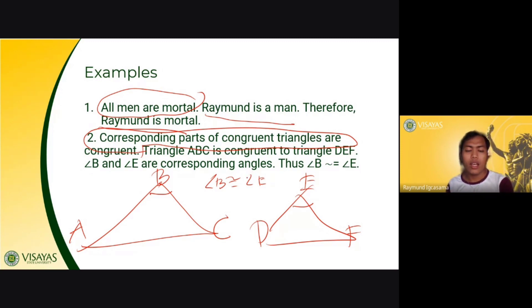So you can add that angle A is corresponding to angle D. So angle A is congruent to angle D. You can add, line segment AB is corresponding to your line segment DE. Therefore, line segment AB is congruent to your line segment DE. That's deductive reasoning.